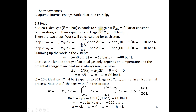Now let's look at Process B. A 20-liter ideal gas expands to 40 liters against a 2 bar external pressure, and then further expands from 40 liters to 80 liters against a 1 bar external pressure. There are two steps, so we compute the work in step 1 and the work in step 2 and sum them. The total work is W = −80 bar·liters.